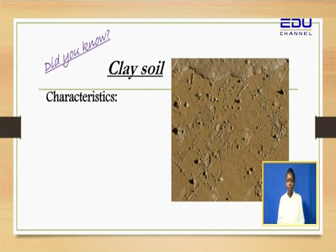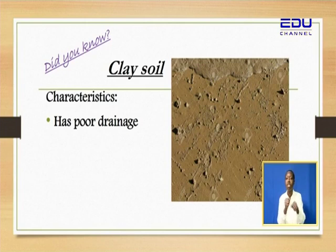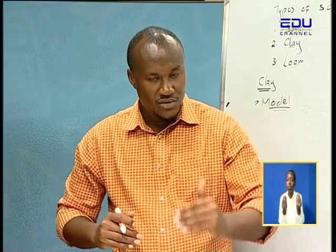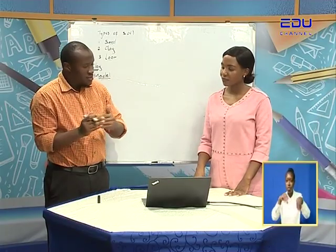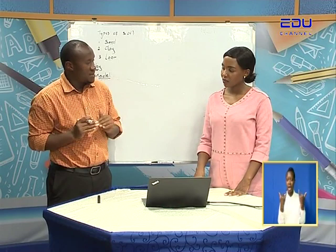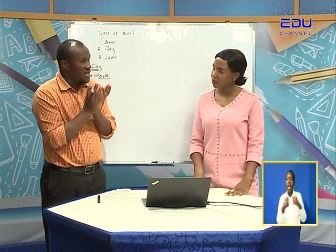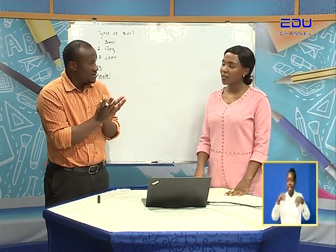Texture is the feel — the smoothness or roughness. So this clay soil: one, it has very poor drainage. Drainage is the ability of water to pass through soil, or the ability of soil to allow water to pass through it. So the clay soil does not allow water to pass through — it holds the water. That characteristic we call retaining water. Our keyword is 'retain,' meaning it holds water.